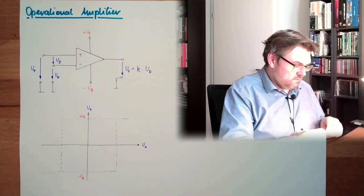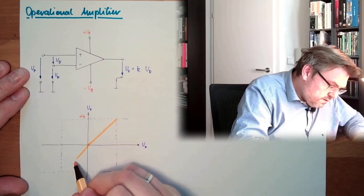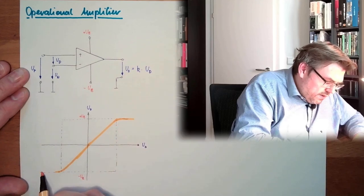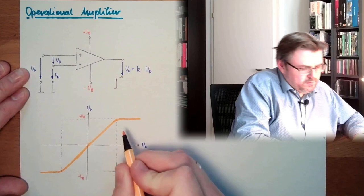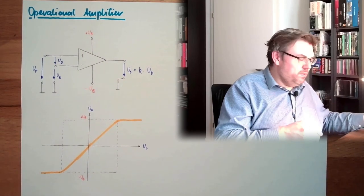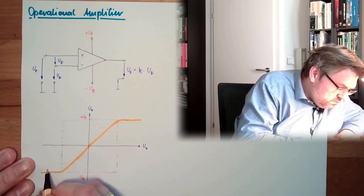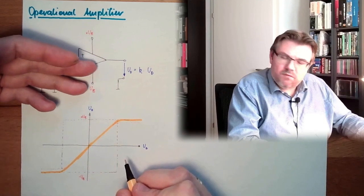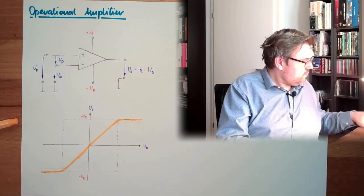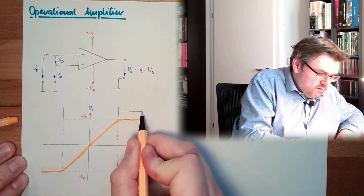This we will not see, because we cannot go beyond the supply voltage. In reality, we will even stay a little bit below, simply because of internal losses somewhere. So that is how this would look like. We have here, and here, this area, and this area.